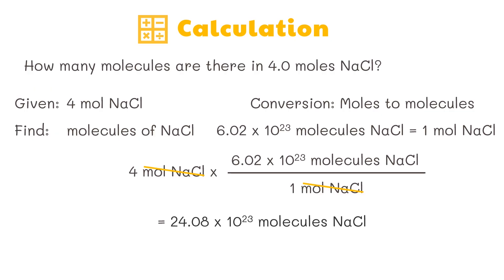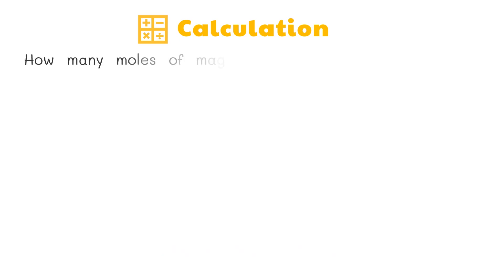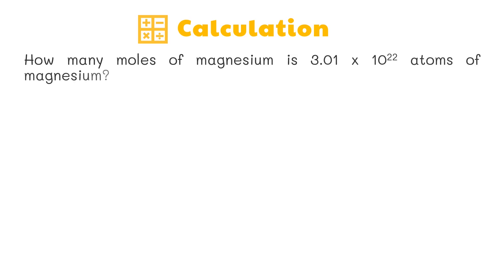We can cancel out common units. This equals 24.08 × 10²³ molecules of sodium chloride, or if we move one decimal point to the left, 2.41 × 10²⁴ molecules of sodium chloride.